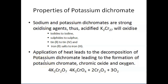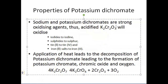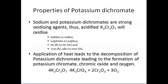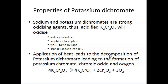When we talk about the properties of potassium dichromate, sodium and potassium dichromate are strong oxidizing agents. Acidified potassium dichromate will oxidize iodides to iodine, sulfites to sulfates, tin(II) to tin(IV), and iron(II) salts to iron(III). On application of heat, potassium dichromate decomposes to form potassium chromate, chromic oxide, and oxygen.